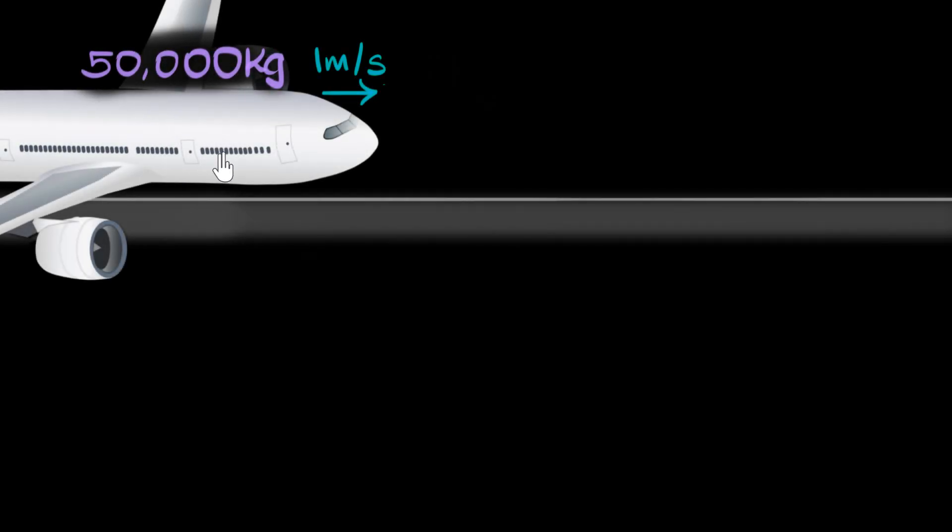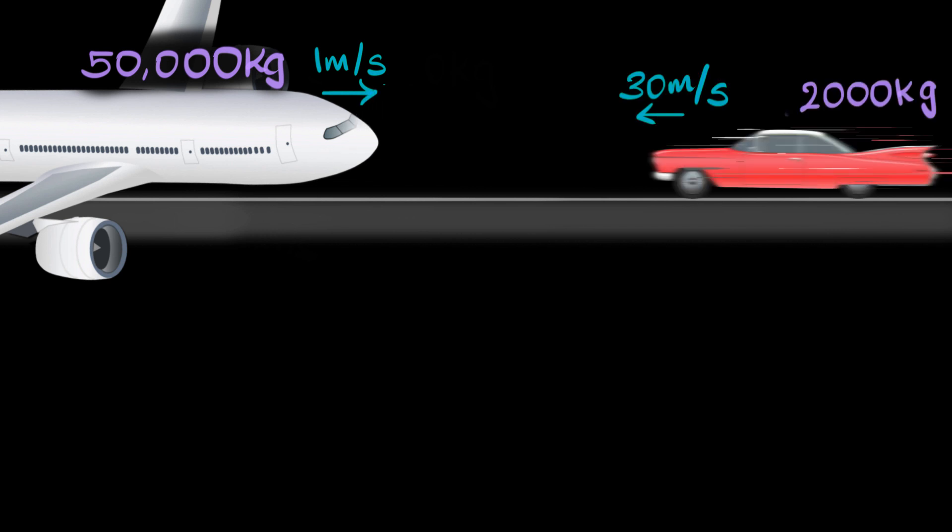A 50,000 kilogram plane is moving uncontrollably at one meter per second, and from the other side, a 2,000 kilogram car is coming in uncontrollably at 30 meters per second. They're both on a collision course. What's gonna happen?